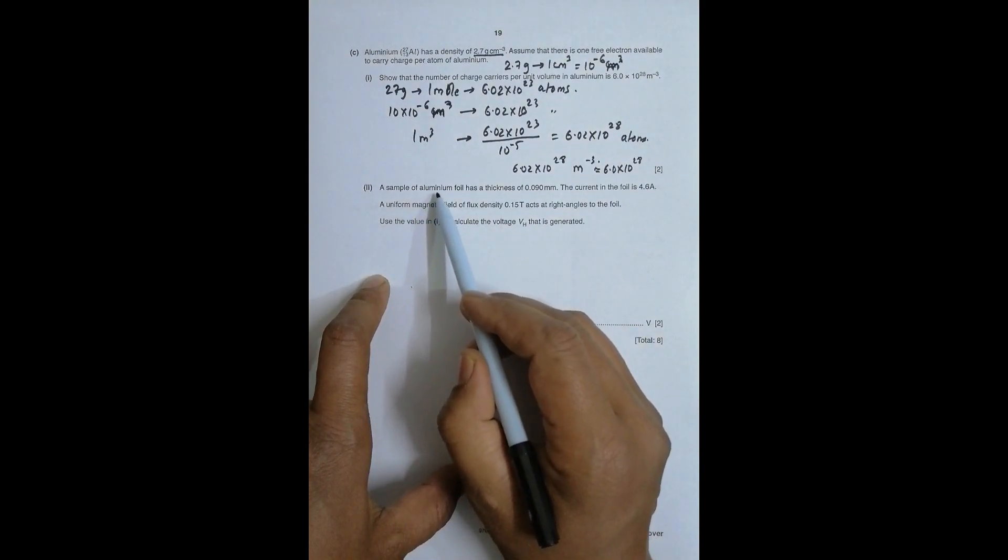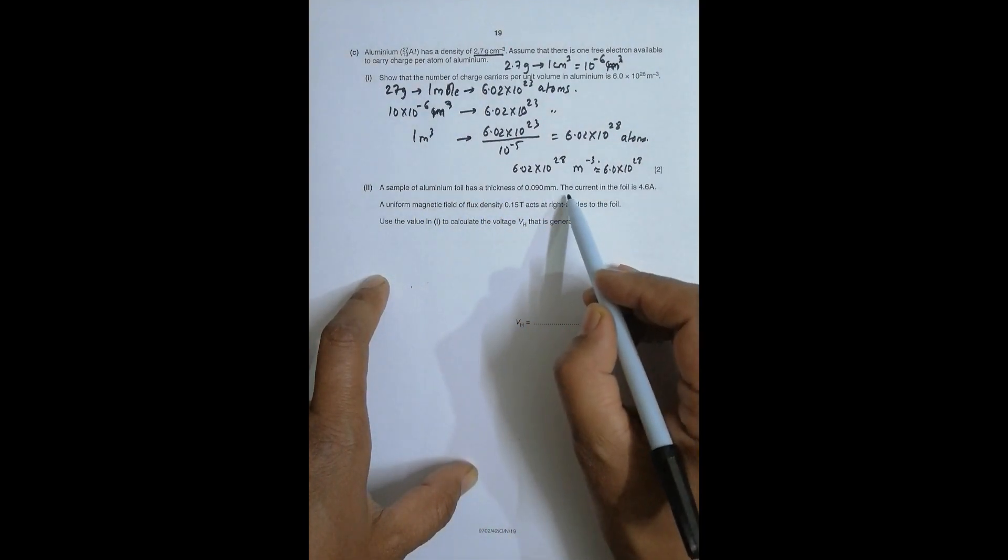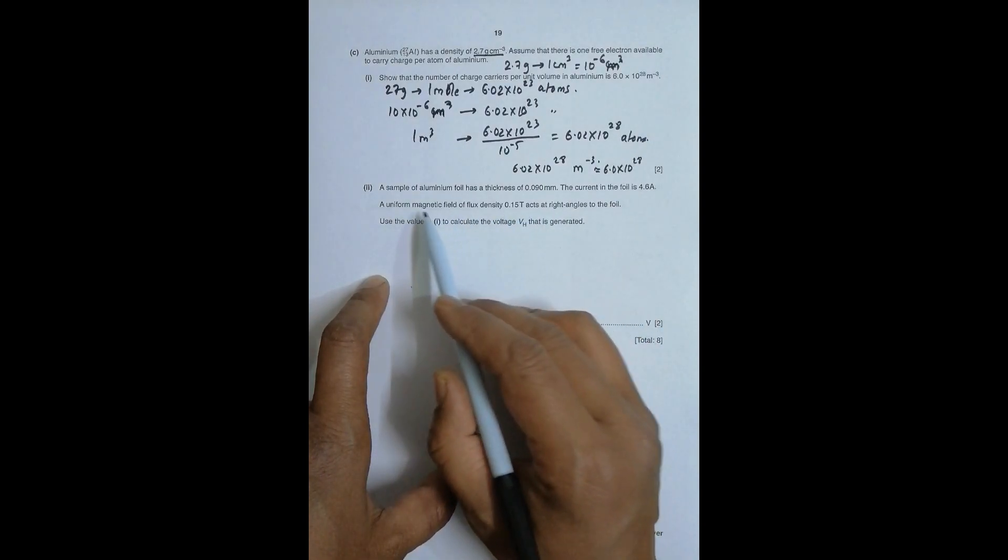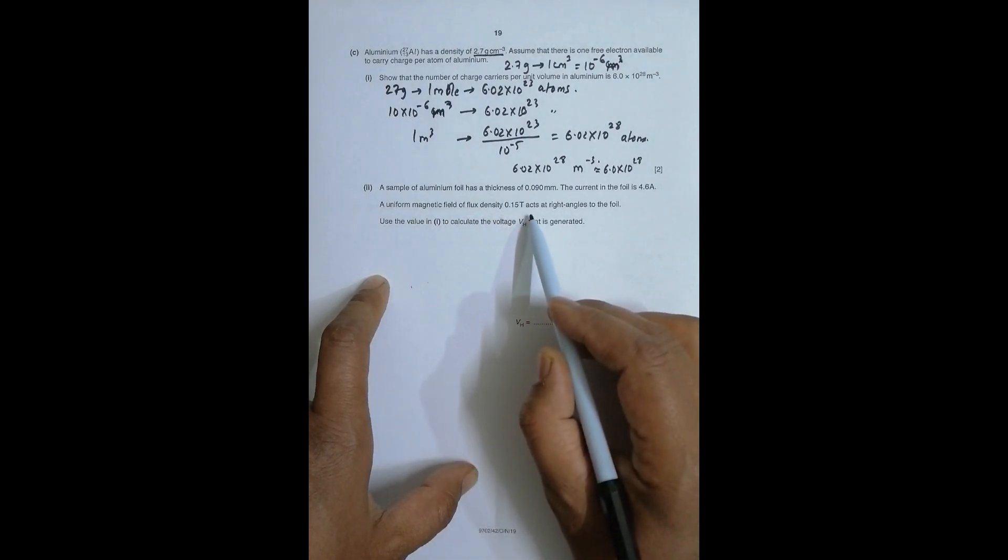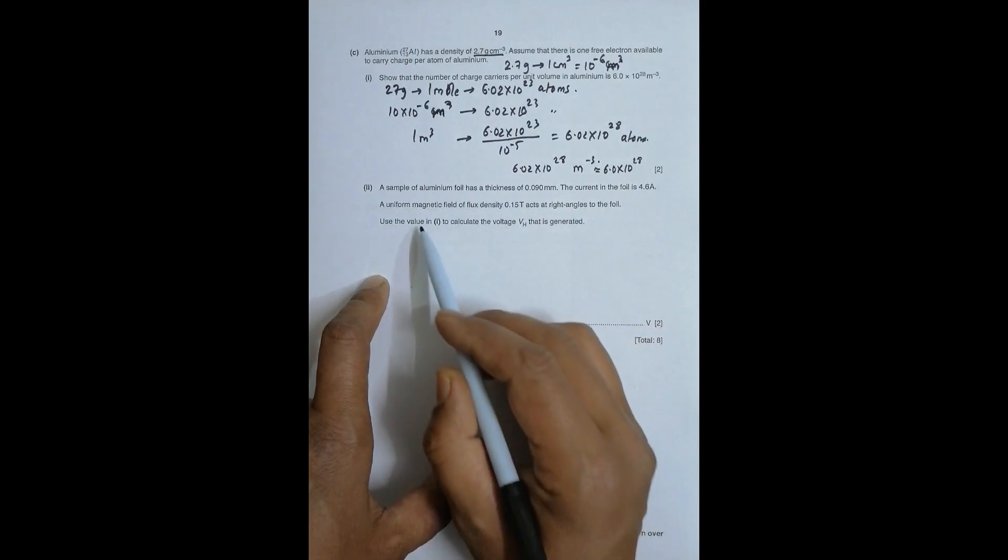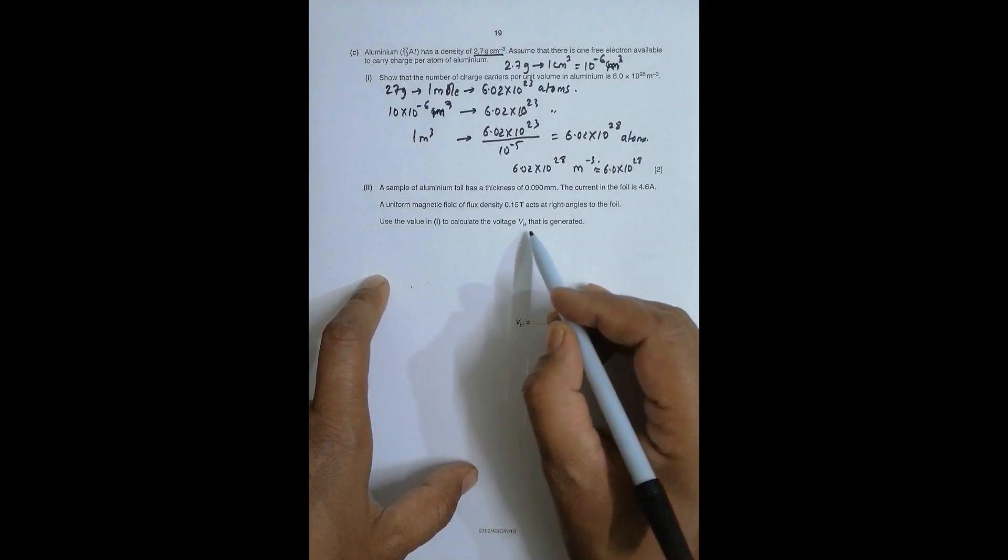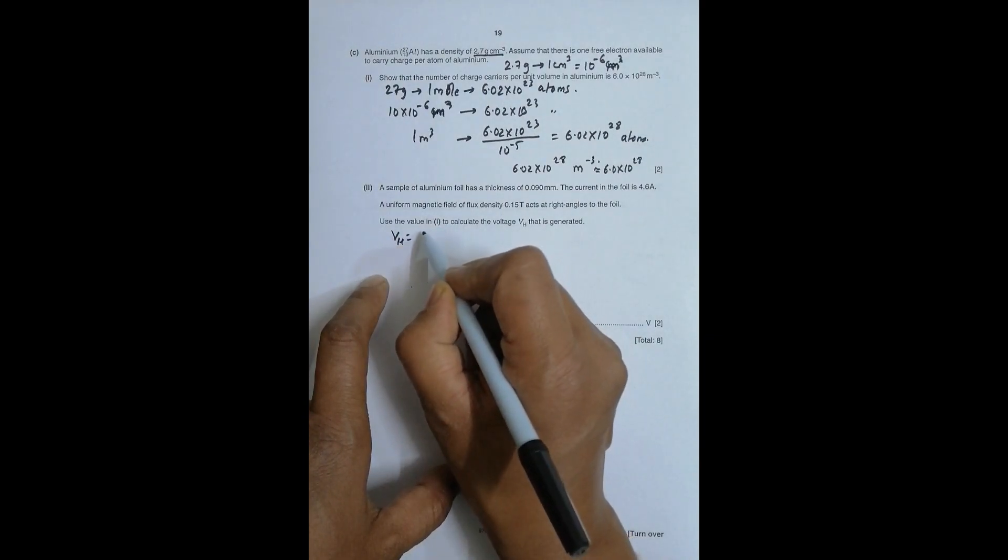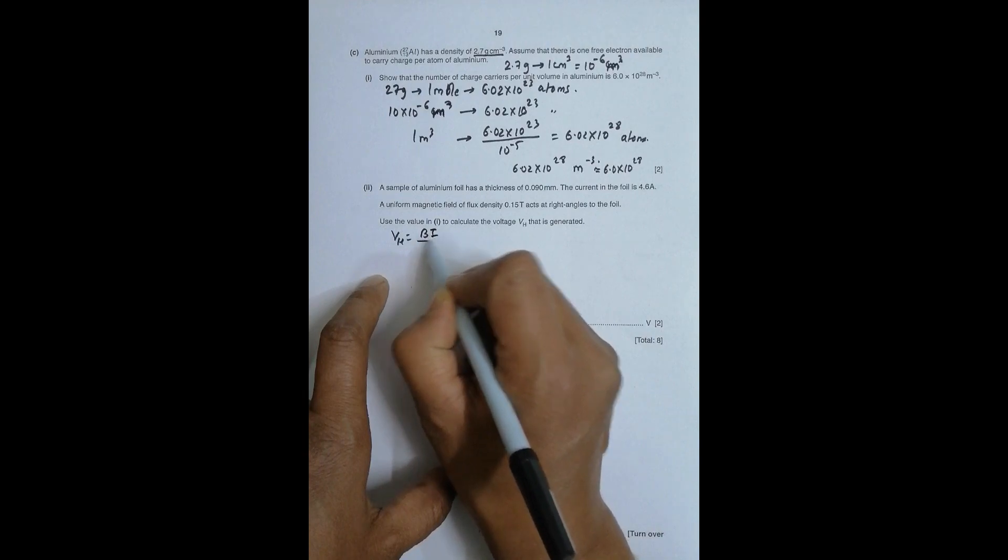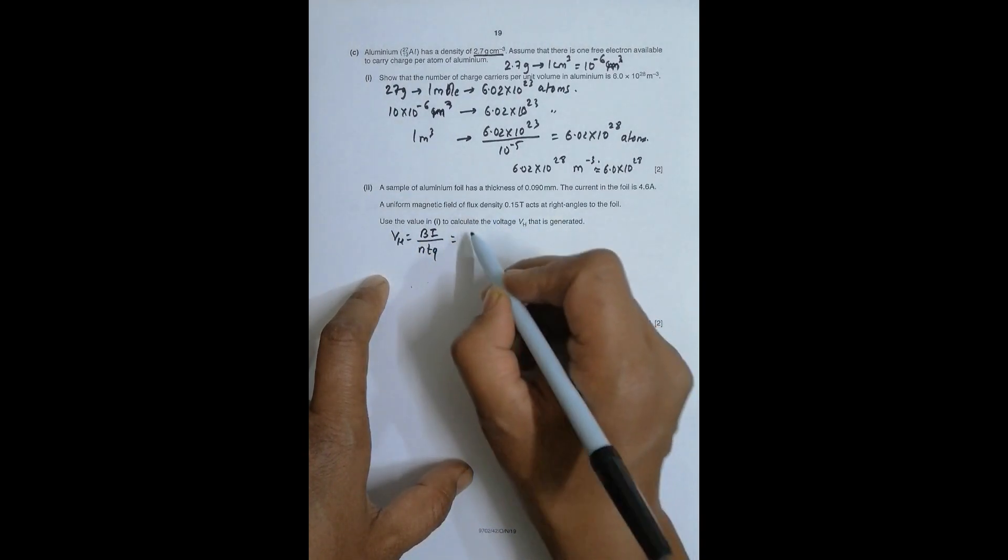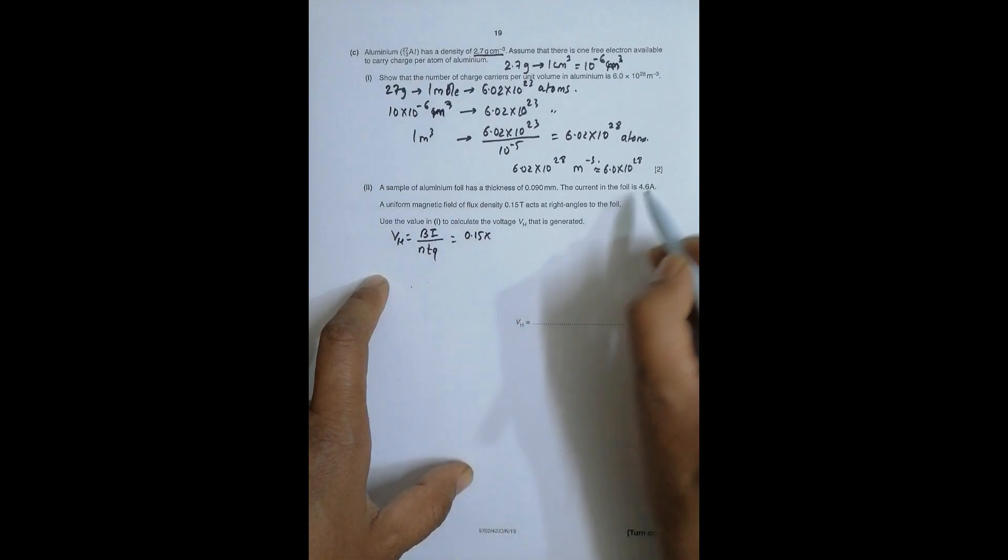A sample of aluminum foil has a thickness of this much, the current in the foil is this much. A uniform magnetic field of flux density 0.15 tesla acts at right angles to the foil. Use the values to calculate the voltage Vh. So Vh equals BI divided by ntq.